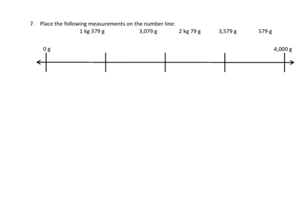And our last example in this video, we're supposed to place each of these measurements on the number line. So first thing I notice is I've got 0 grams here, and I've got 4,000 grams here. So that means each interval is 1,000. So here's 1,000 grams. Another 1,000 gives us 2,000. Another 1,000 gives us 3,000 grams. So now if we're going to place these, let's see.